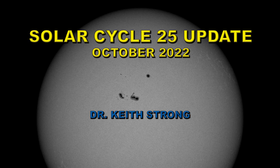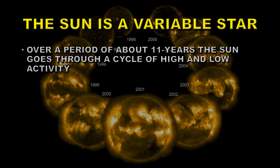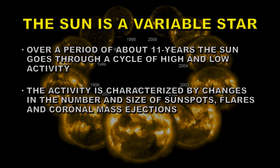Welcome. This is an update to the activity levels of Solar Cycle 25 for October of 2022. One of the things we have to remember when looking at the sun is that it is a variable star. Over a period of about 11 years, the sun goes through a cycle of high and low activity, characterized by changes in the number and size of sunspots, the number and intensity of flares, and the number of coronal mass ejections that we see.